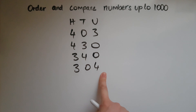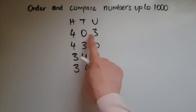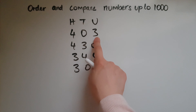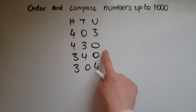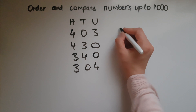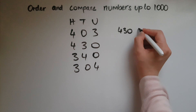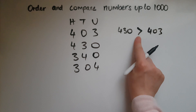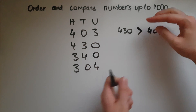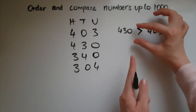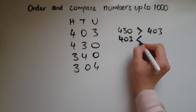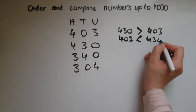Let's compare some of the numbers. If I compare the first two, 403 means I've got 400 and just 3, whereas 430 is bigger. So 430 is greater than 403. The greater than symbol is like a crocodile mouth that opens up and likes to eat the bigger number. So 403 is smaller than 430.